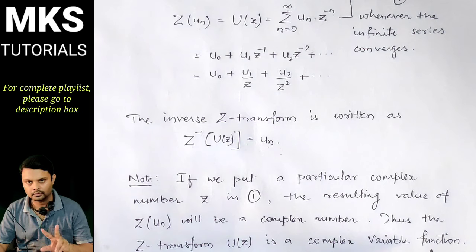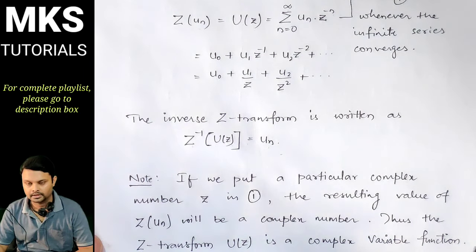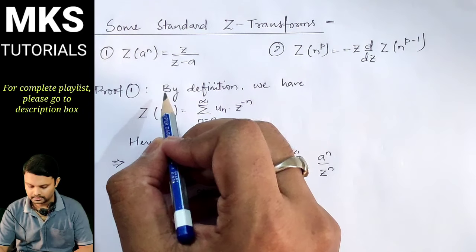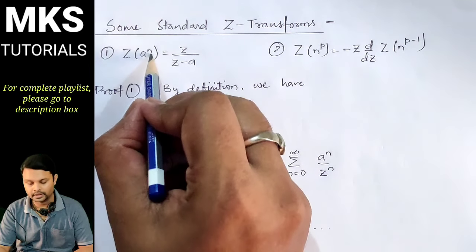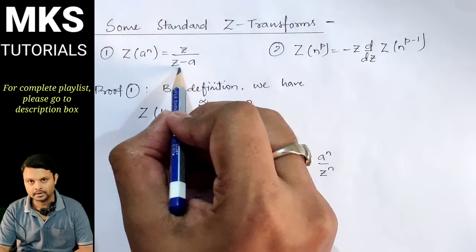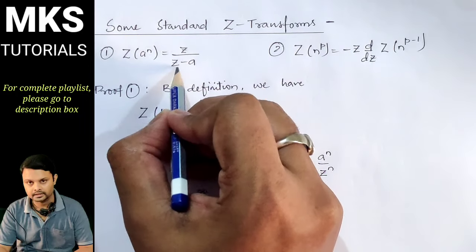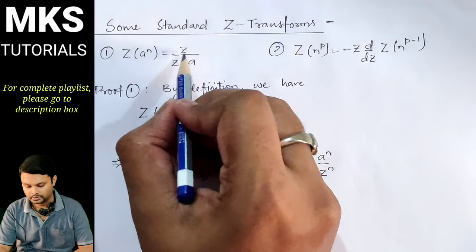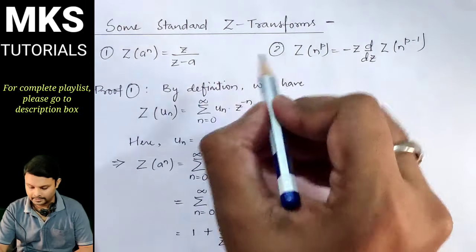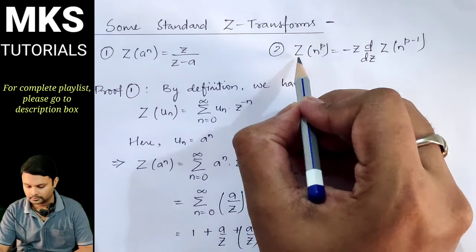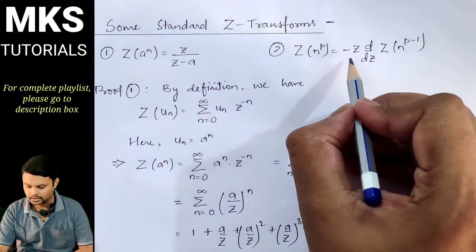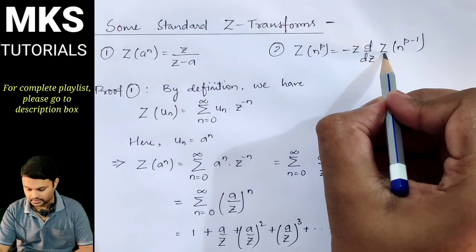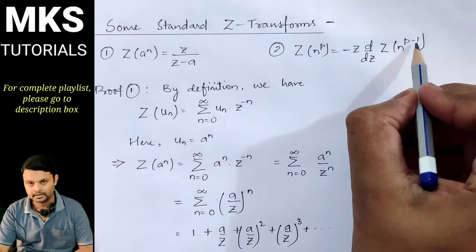Now, we will derive two important standard Z-transform formulas. The first is: Z-transform of a to the power n equals z upon z minus a, where z is small z.